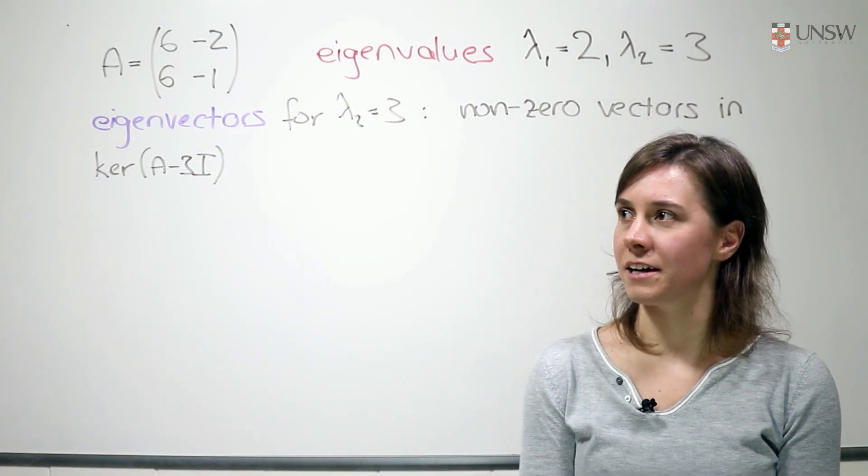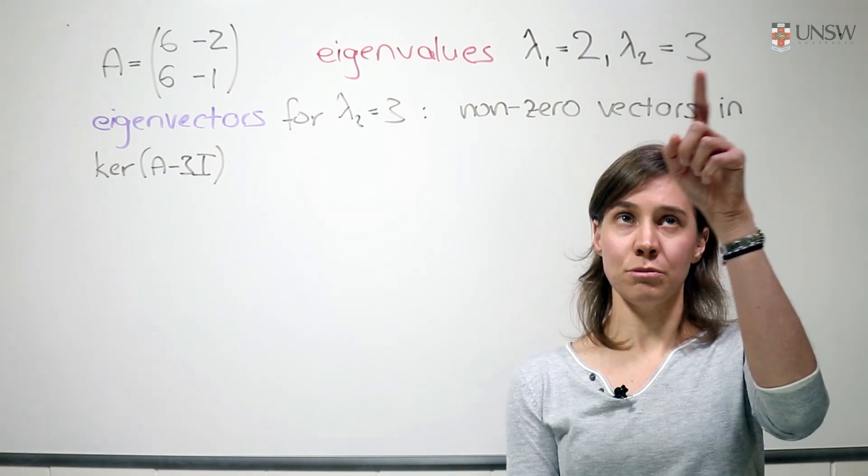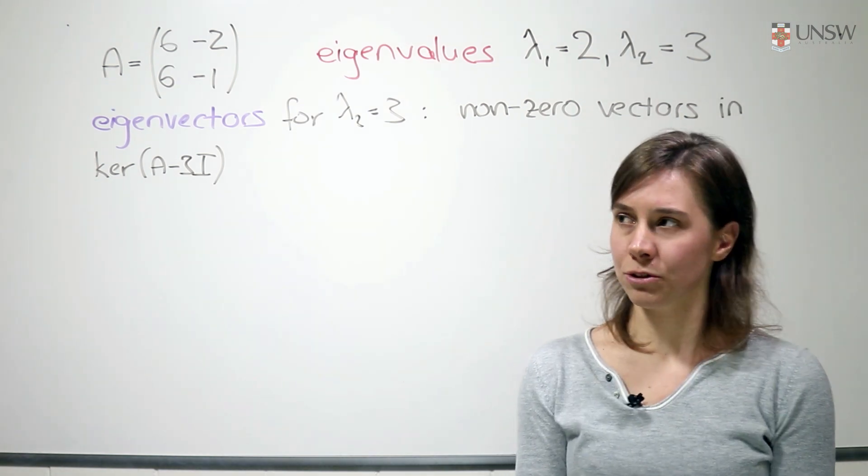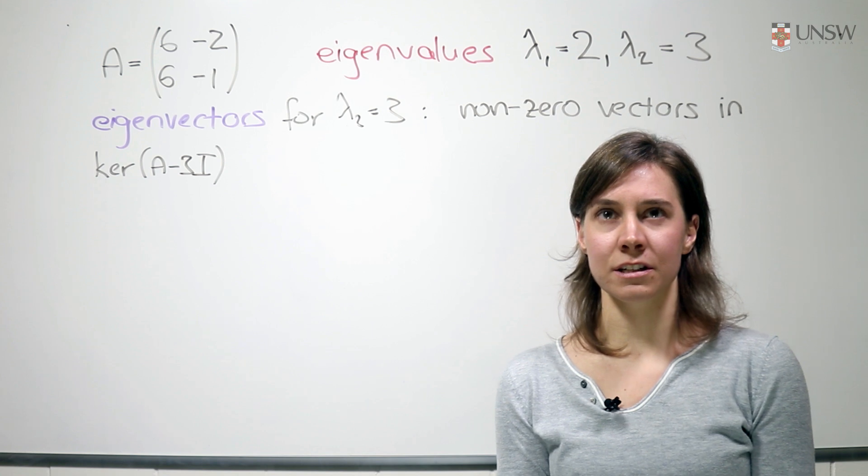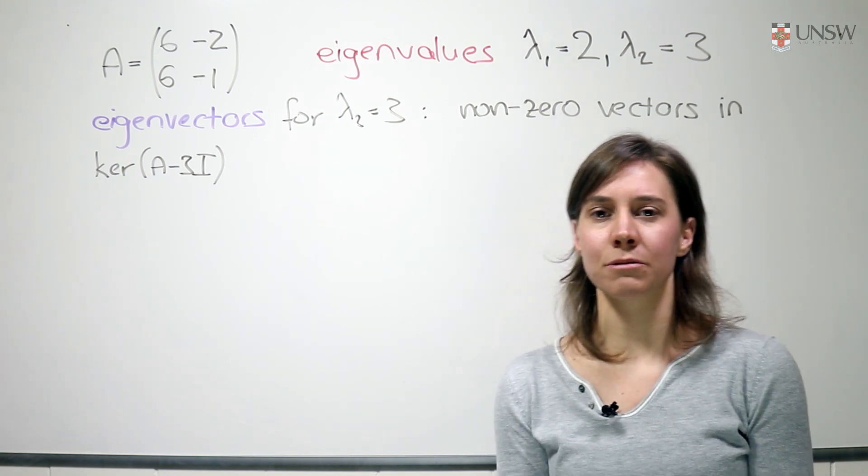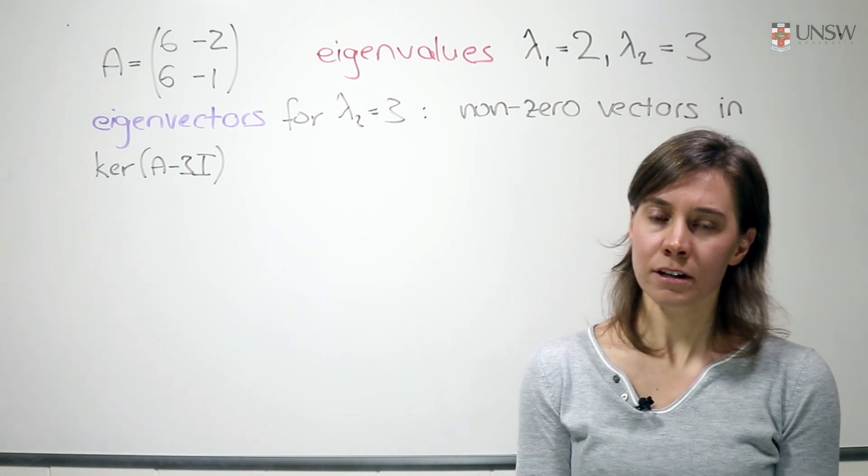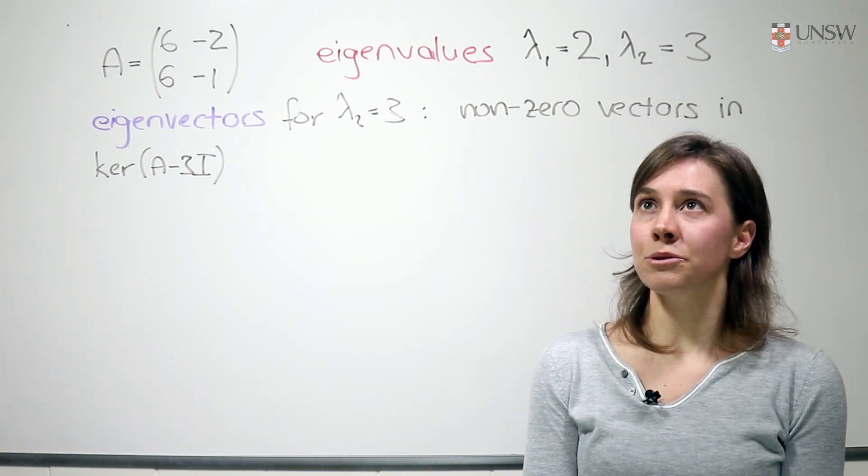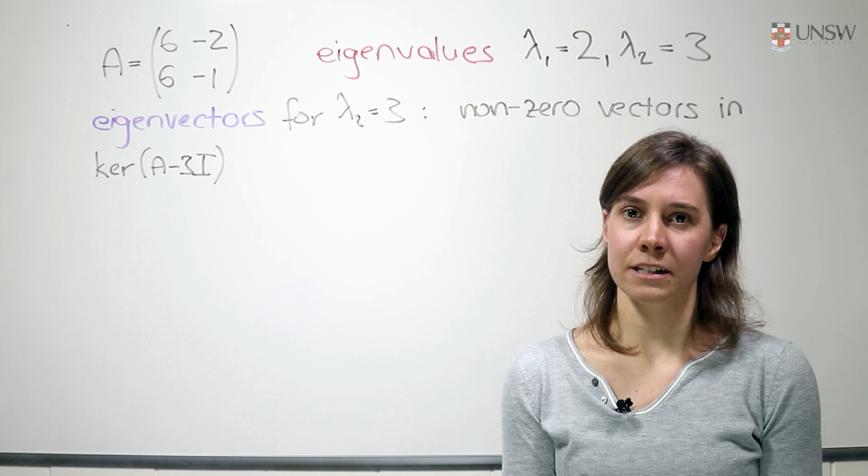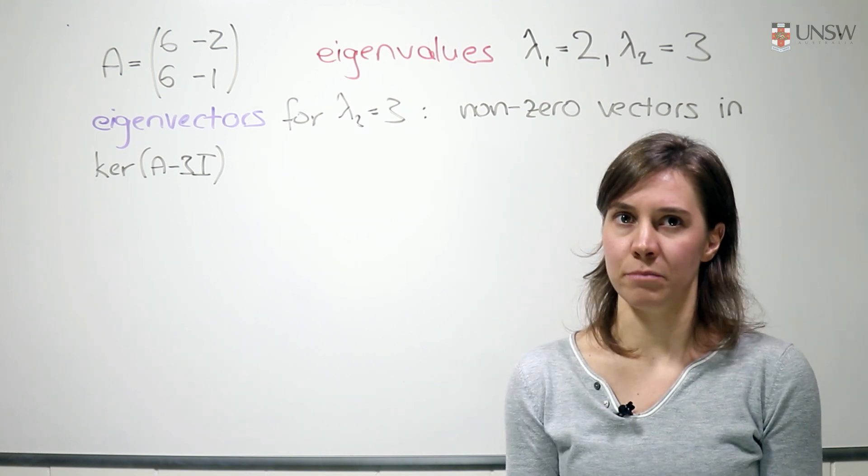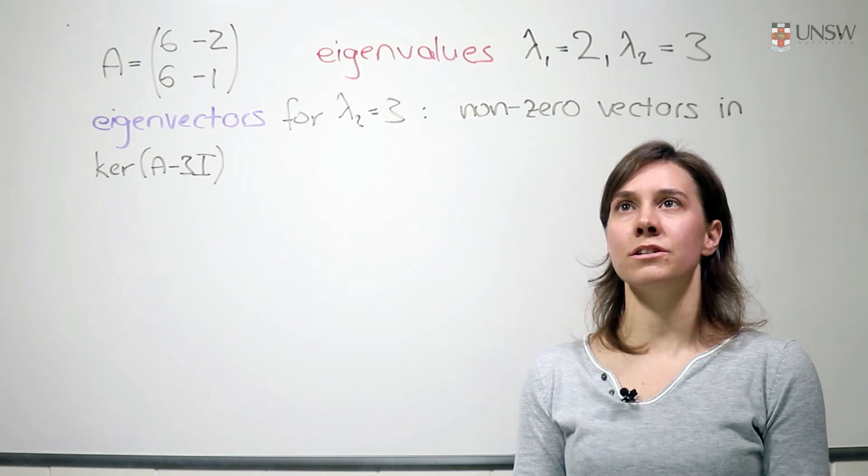Now we'd like to find the eigenvectors for the eigenvalue lambda 2 equal to 3. And we could do it exactly in the same way that we did it for the first eigenvalue, but we're going to do something a bit faster. We're going to use the fact that if all the roots of the characteristic polynomial are distinct, then all the kernels are one dimensional.